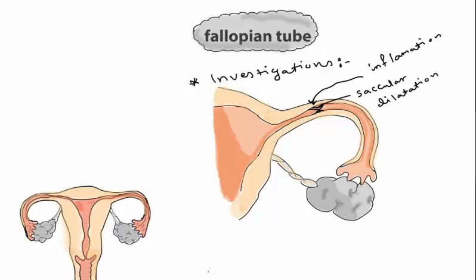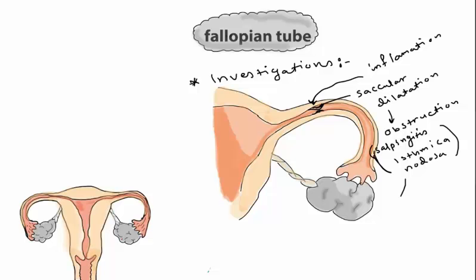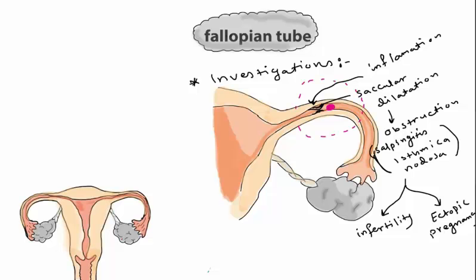Inflammation of the fallopian tube initially causes saccular dilatation, eventually leading to obstruction — called salpingitis isthmica nodosa — which is a common cause of infertility. It may also lead to ectopic pregnancy, where the zygote implants in the fallopian tube, causing it to enlarge and eventually rupture. A surgical procedure to relieve the obstruction is called tuboplasty.